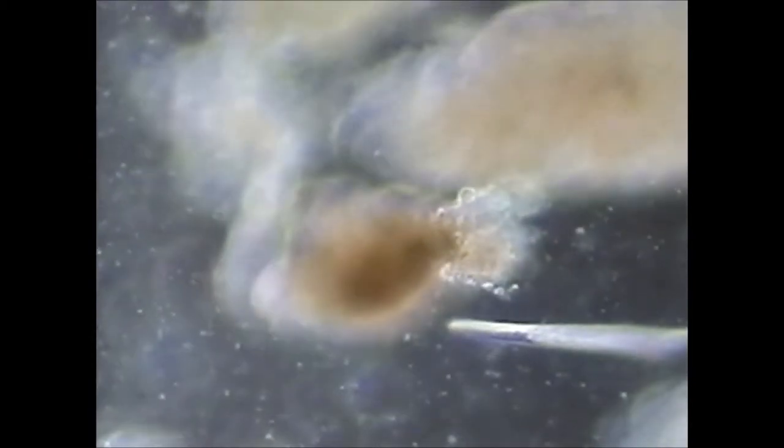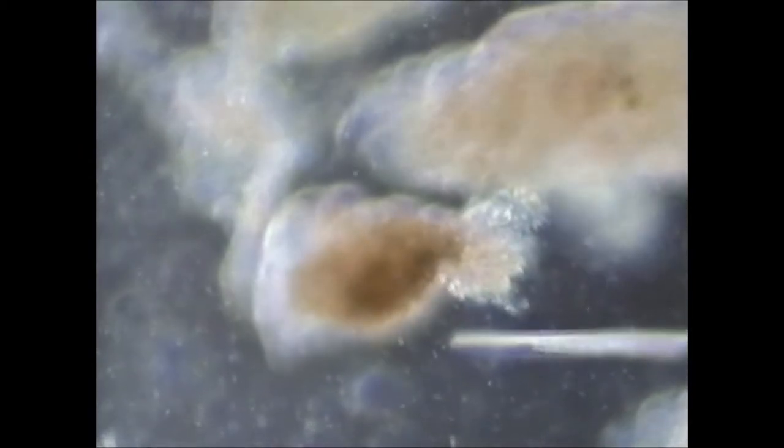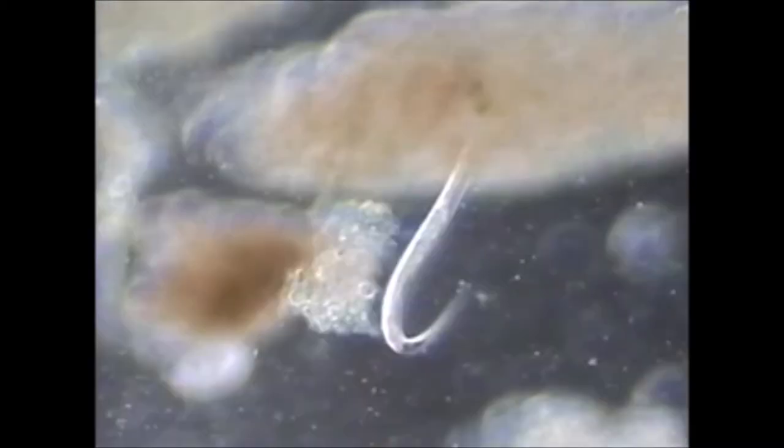They have an open digestive system, mouth where food enters and an anus where waste exits. Estimated 40,000 species. Found in nearly every ecosystem.